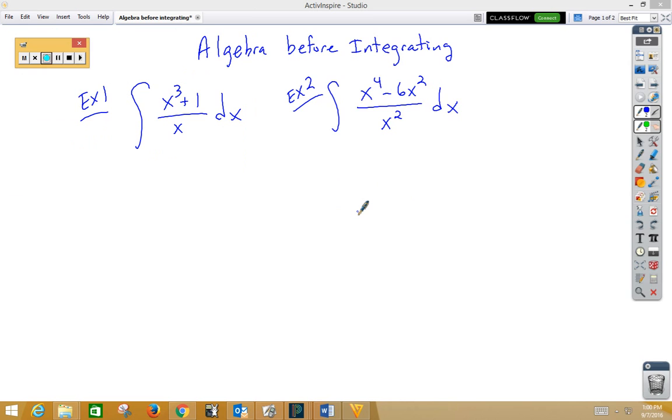In our first example we can separate this into x cubed over x plus 1 over x dx, which then reduces to x squared dx plus integral of 1 over x dx.